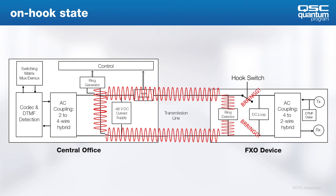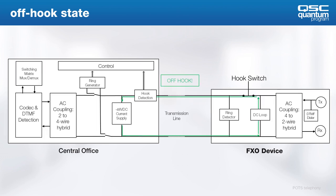Ring voltage varies from country to country, as does the ring cadence, which defines how long the burst of ring voltage occurs and how often. The central office would also send a ring-back tone so the caller knows the destination is ringing. When someone answers the phone, the hook switch closes and causes current on the line. When the central office detects that current, it knows the call has been answered and can stop ringing the circuit. The typical loop current is between 25 and 75 milliamps — write that down, that might be on a quiz. If the circuit was not ringing and somebody picked up to make a call, the CO would detect the loop current and send a dial tone.